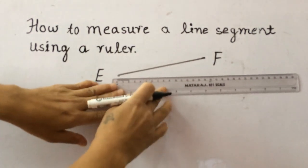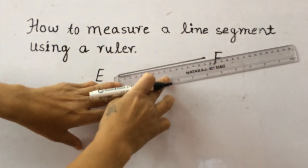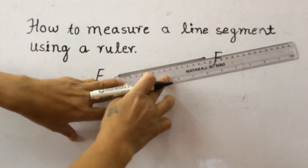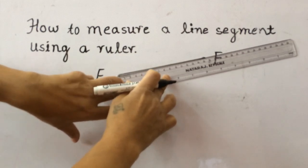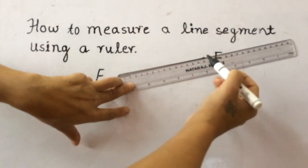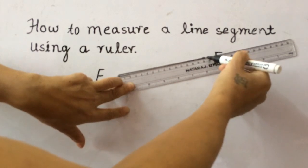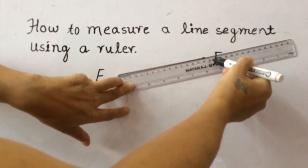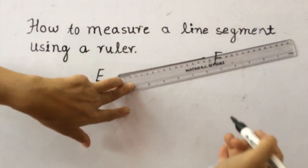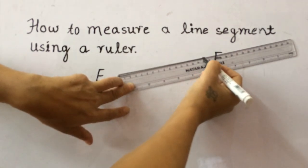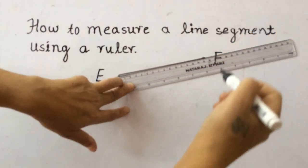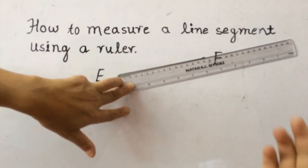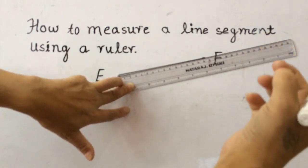And now this endpoint is exactly between 15 and 16. You can see, you can count these small lines: 1, 2, 3, 4, 5. These smaller lines are called millimeter lines. 10 millimeter lines make 1 centimeter.